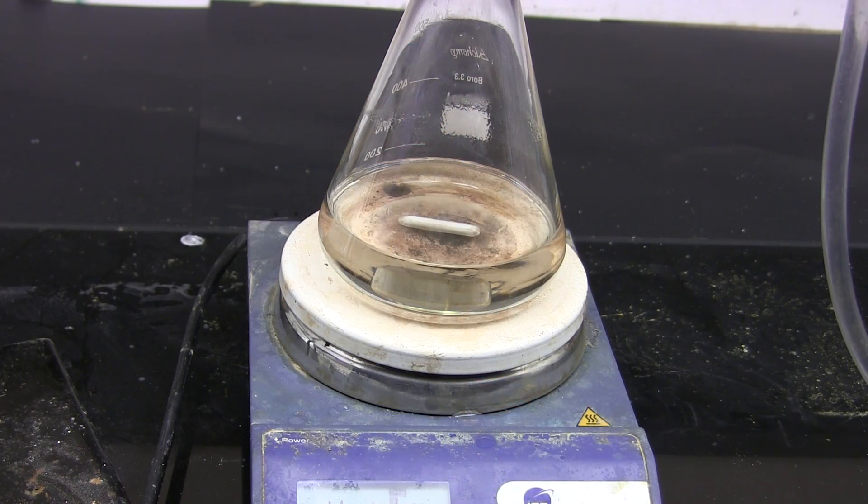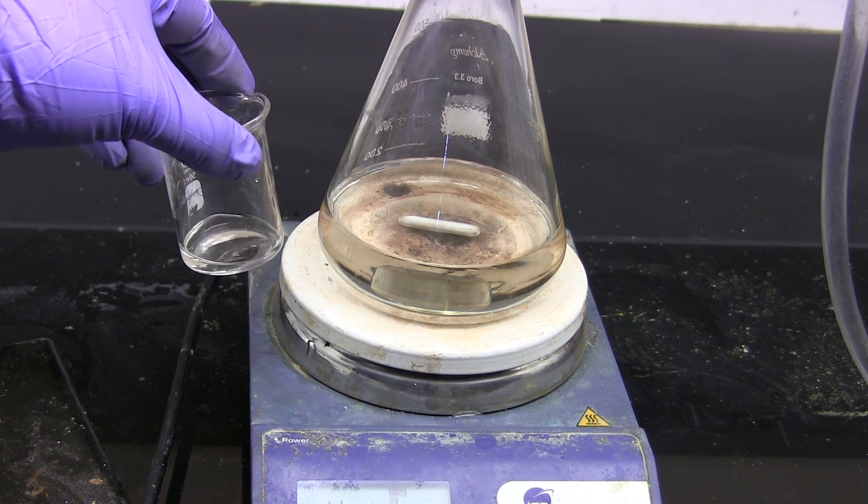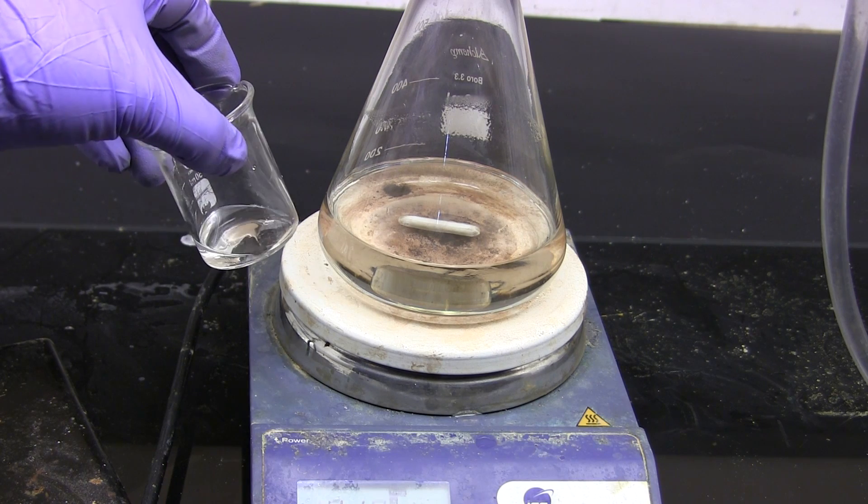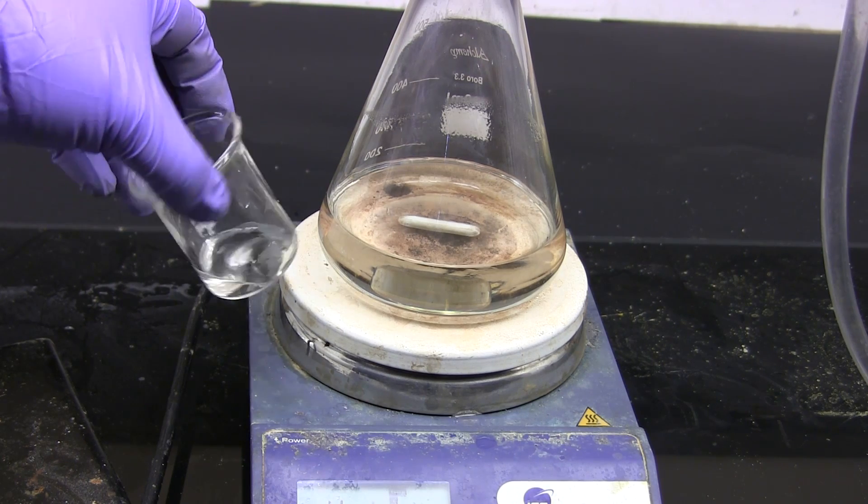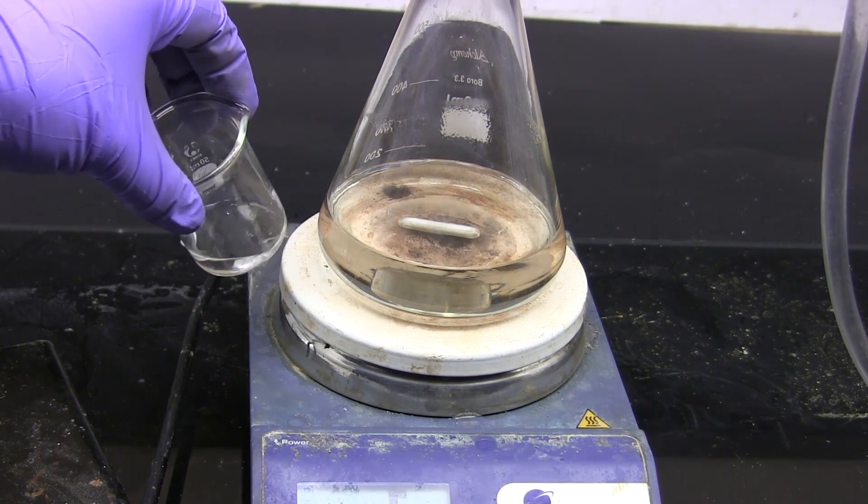And here is the toluene after cooling without any visible water content. And here is the water that was originally added. This method is a very cheap way of removing water from immiscible solvents and excellent for pre-drying solvents before using much more expensive chemical drying techniques. Allowing you to use less chemicals overall.